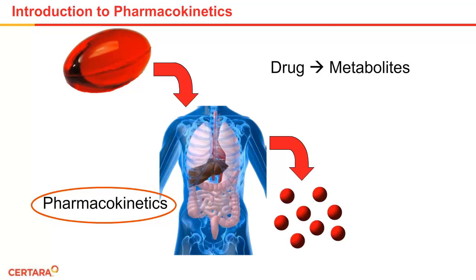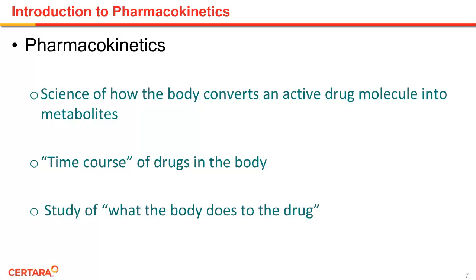Therefore, pharmacokinetics is the study of the processes of how your body treats the drug that comes in, how it is converted into metabolites, and how it makes it out of the body. In summary, pharmacokinetics is the science of how the body converts the active drug into metabolites. Pharmacokinetics can also be thought of as the science that studies the time course of the drug in the body, or even as the study of what the body does to the drug.